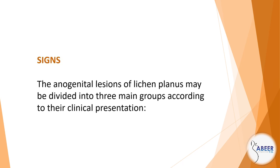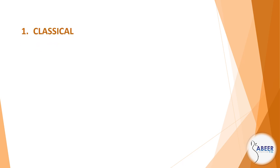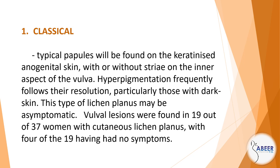Signs: The anogenital lesions of lichen planus may be divided into three main groups according to their clinical presentation. Number 1: Classical. Typical papules will be found on the keratinized anogenital skin with or without striae on the inner aspect of the vulva. Hyperpigmentation frequently follows resolution, particularly in those with dark skin. This type of lichen planus may be asymptomatic. Vulval lesions were found in 19 out of 37 women with cutaneous lichen planus, with 4 of the 19 having had no symptoms.